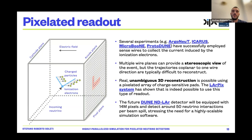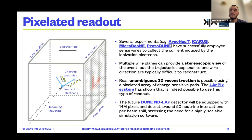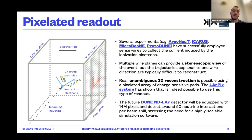The future DUNE ND-LAr detector will be equipped with 14 million pixels and will detect around 15 neutrino interactions per beam spill. A beam spill is when the beam sends neutrinos to your detector — it's not continuous but divided into spills in time. Given these numbers, it's clear we need a highly scalable solution for both the simulation software and the reconstruction.